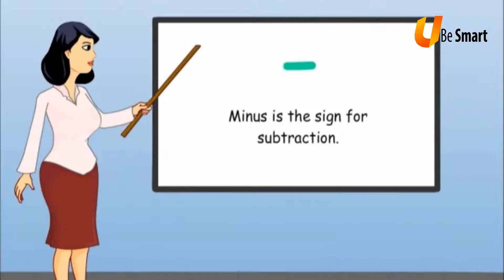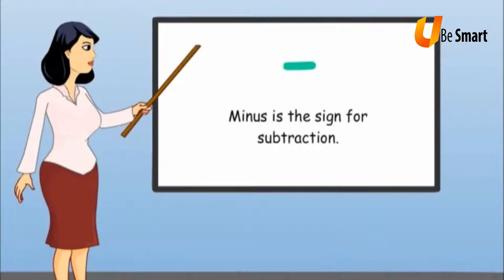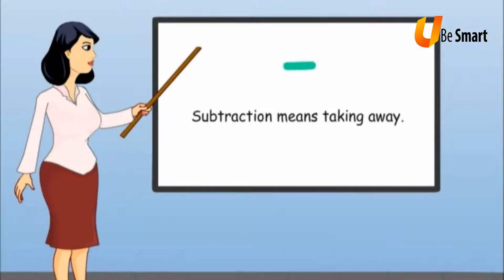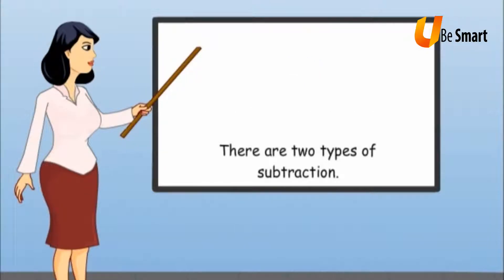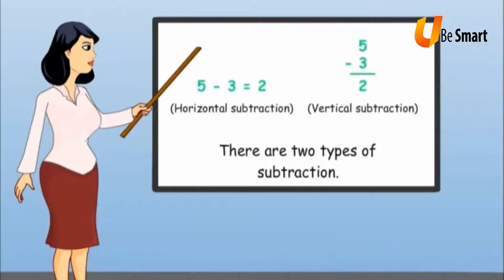Minus is the sign for subtraction. Subtraction means taking away. There are two types of subtraction: horizontal subtraction and vertical subtraction.